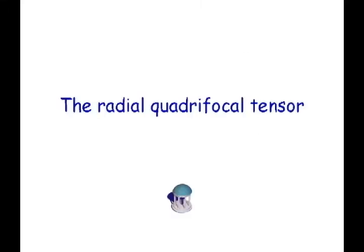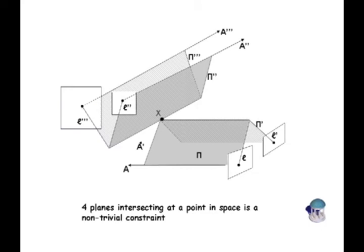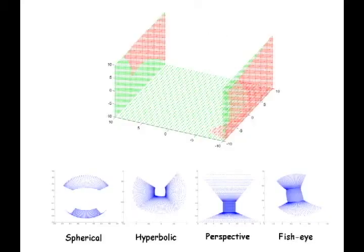The radial quadrifocal tensor encodes the multi-view constraint among four 1D radial cameras, namely four planes intersecting at a common point in 3D space. A projective reconstruction of the scene can be obtained and can be upgraded to metric under the assumptions of zero skew and unit aspect ratio.